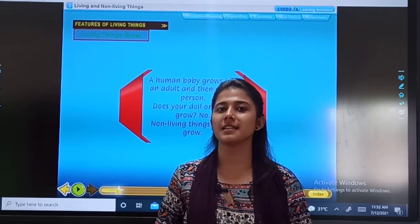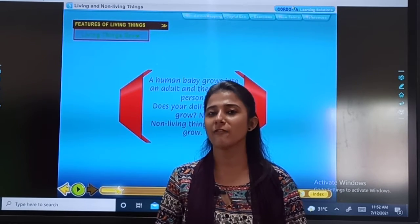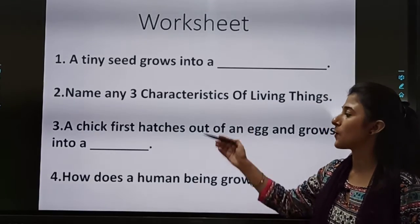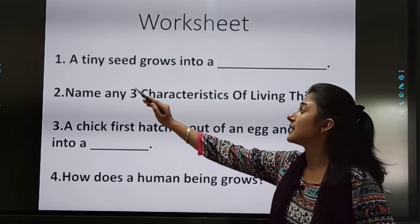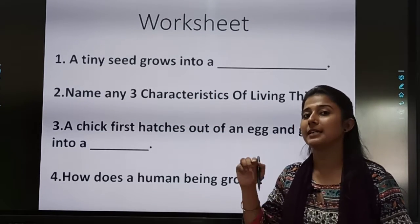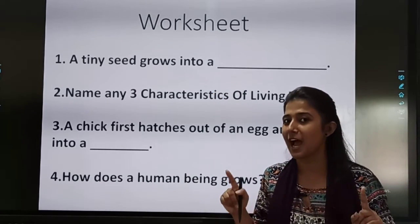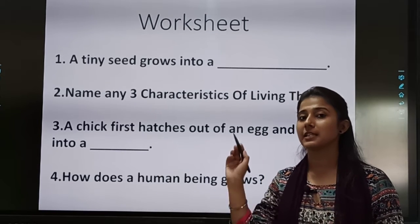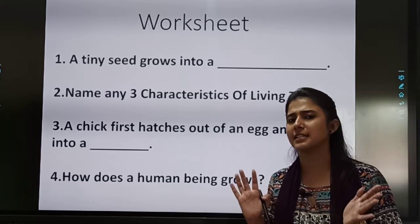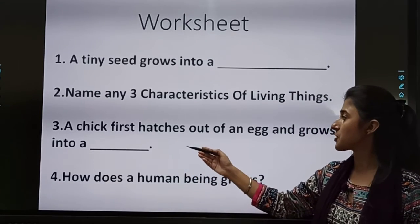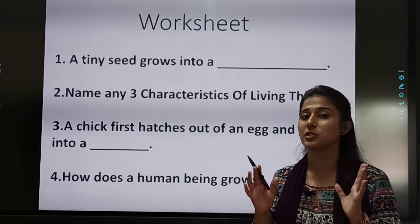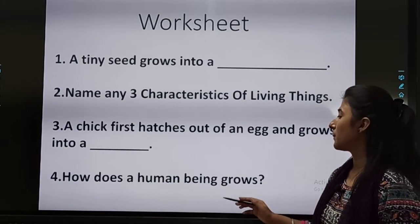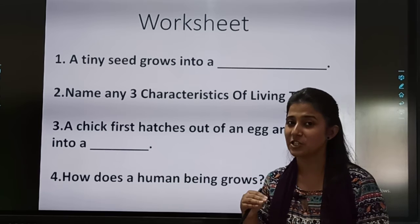Did you see the pictures and understand the concept? Now I have a short worksheet for you — only four questions. First: a tiny seed grows into a dash. Second: name any three characteristics of living things — that day we discussed six head points, you have to name any three. Third: a chick first hatches out of an egg and grows into a... you all know the answer. Fourth: how does a human being grow? You have to mention the stages.